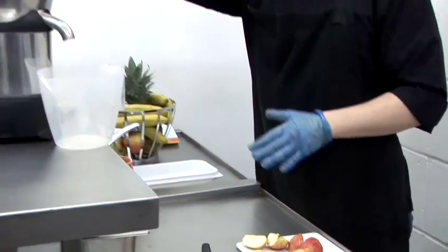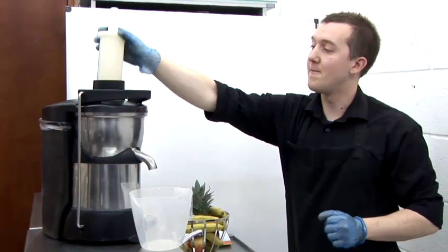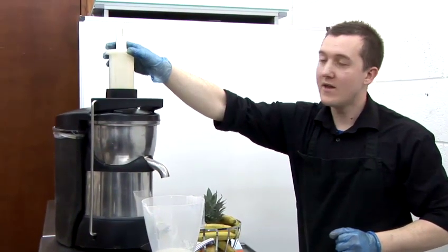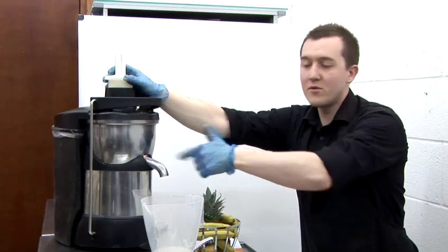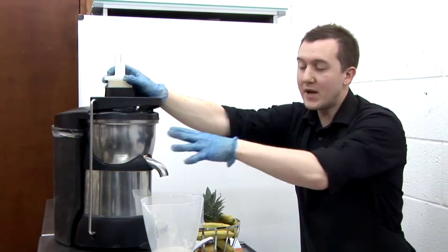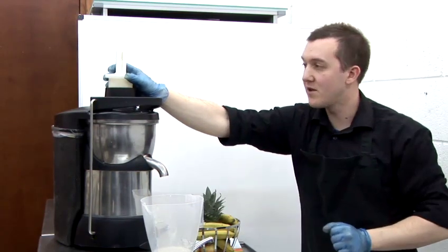We're going to turn the machine on in a second and put the apples in. You have a plunger on most machines that will plunge down pressing the apple. This is a centrifugal juicer, which means it will spin round, spinning the juice out and putting the pith in the back.